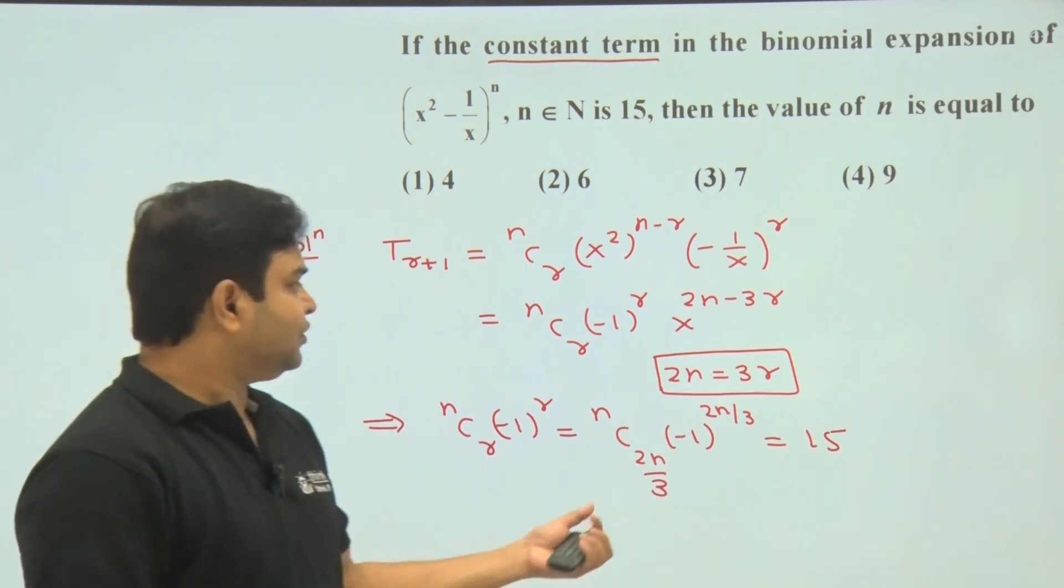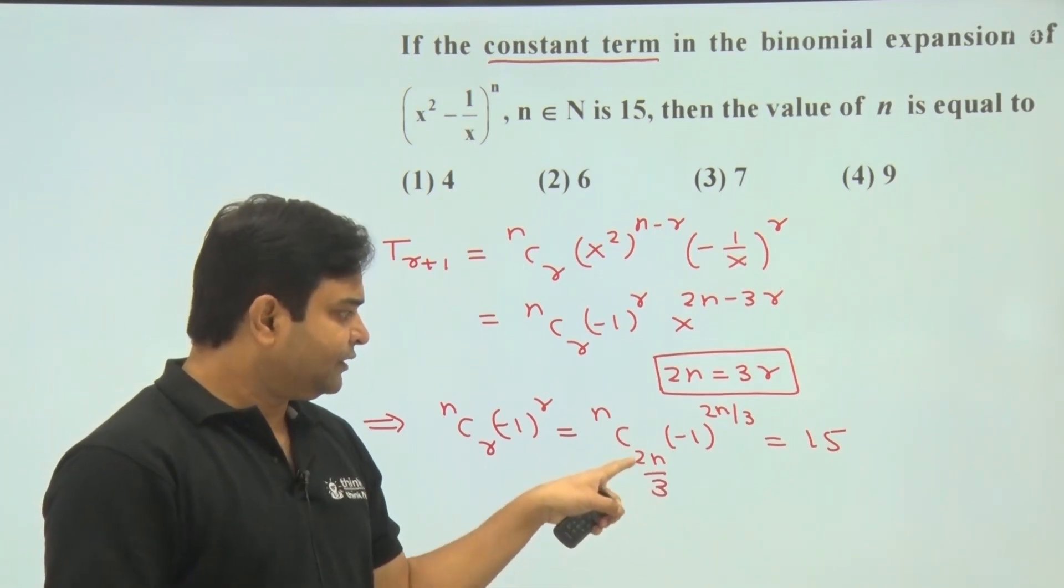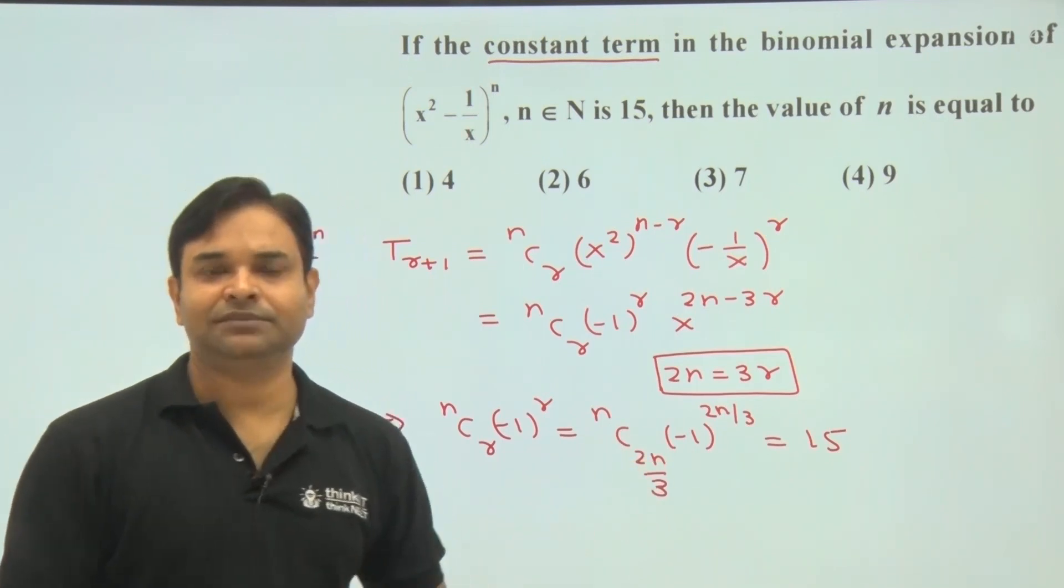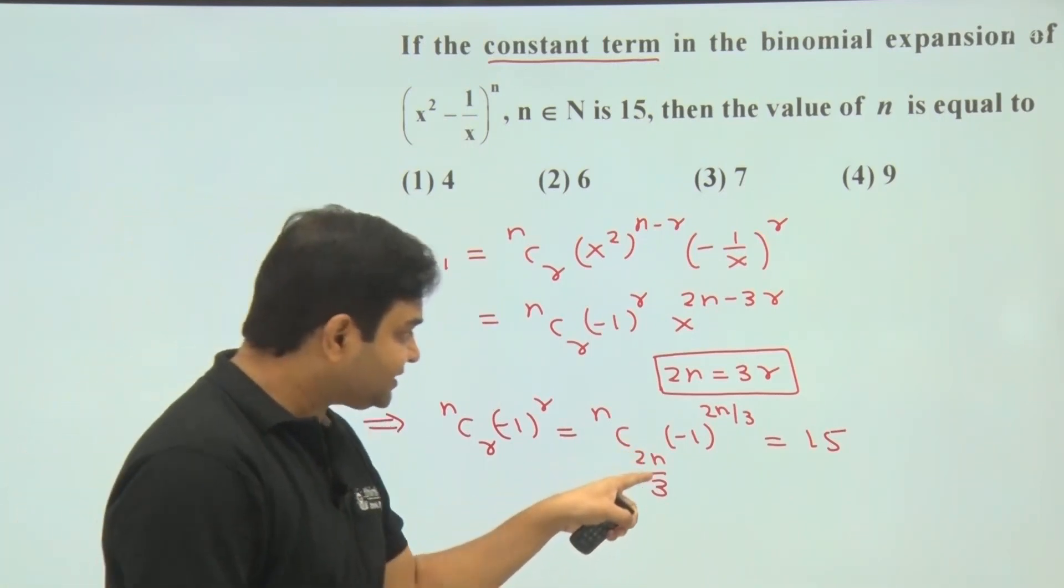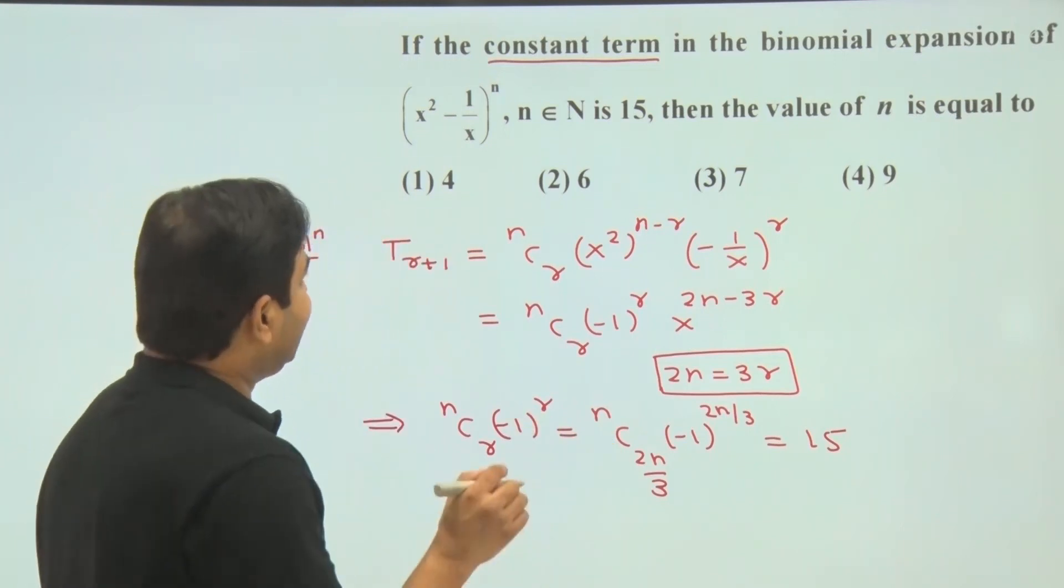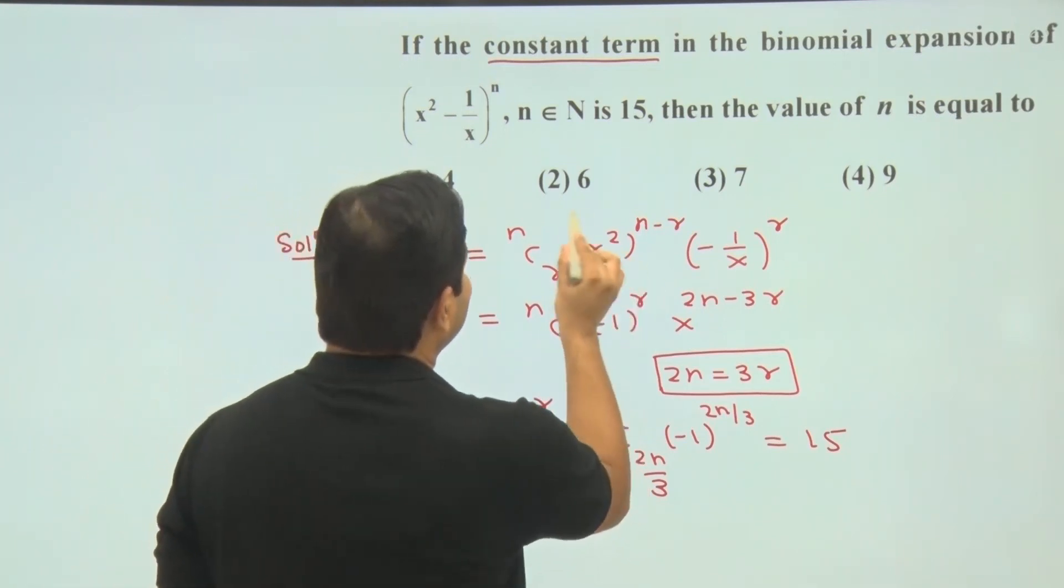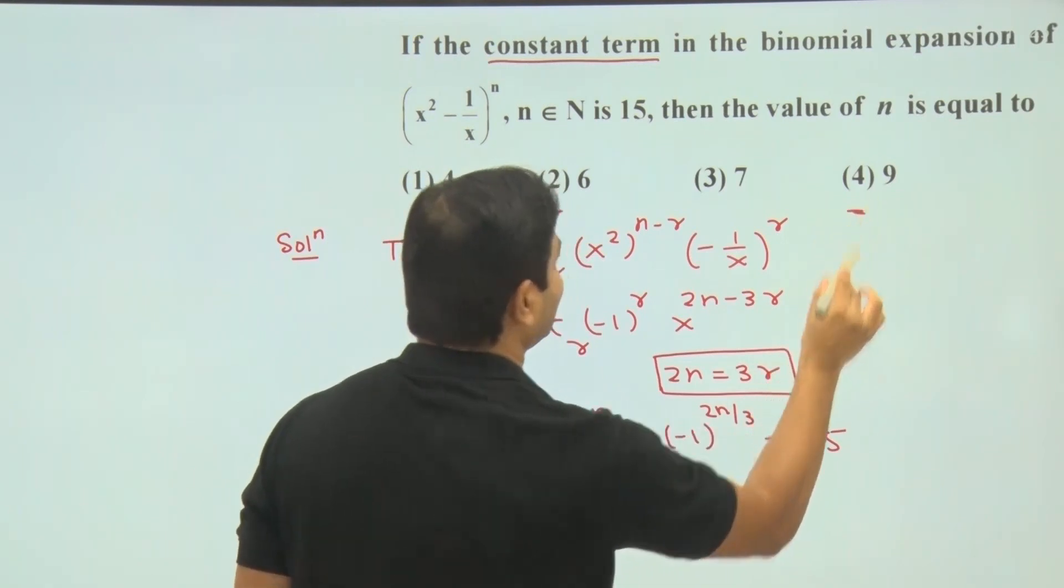Okay, so as we can see, this 2n by 3 must be divisible by 3 because this must be a whole number. So n must be divisible by 3. N divisible by 3, we have two options: 6 and 9.